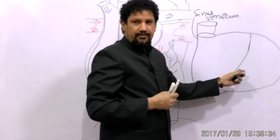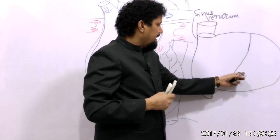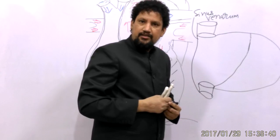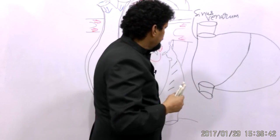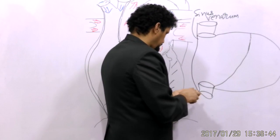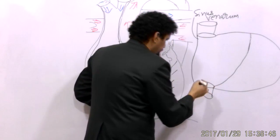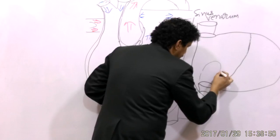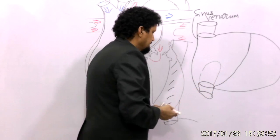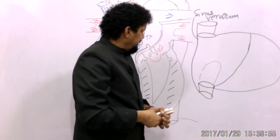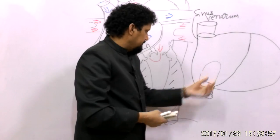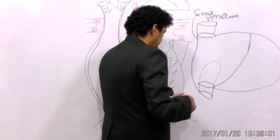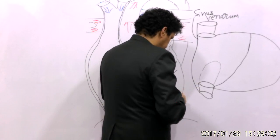The right atrium has a smooth part and a rough part. The smooth part is known as atrium proper, and the rough part develops from the sinus venosus, known as sinus venarum. Here we can see the fossa ovalis — this is the floor, and these are the anterior and posterior limbs of the fossa ovalis.